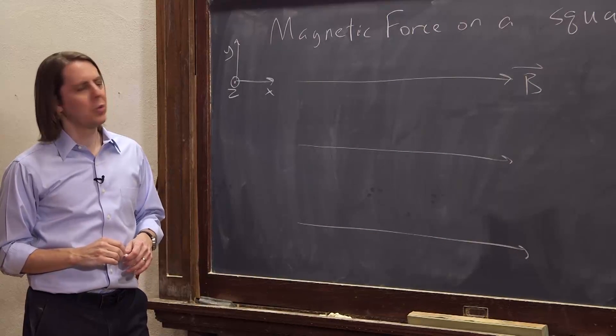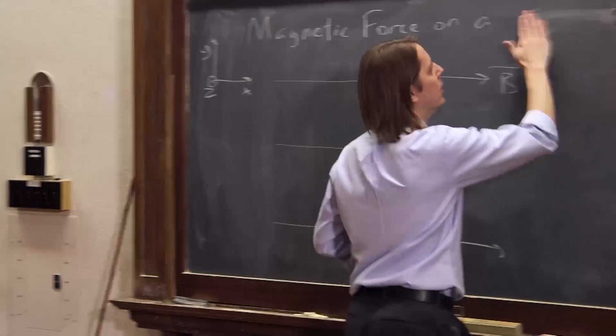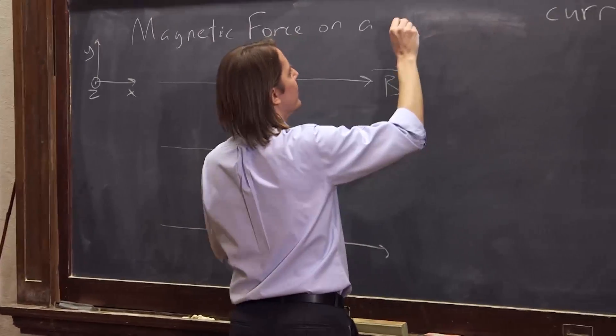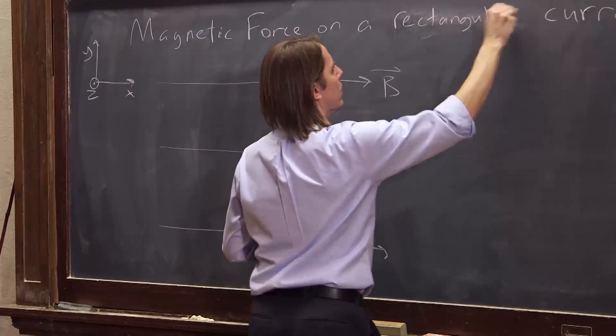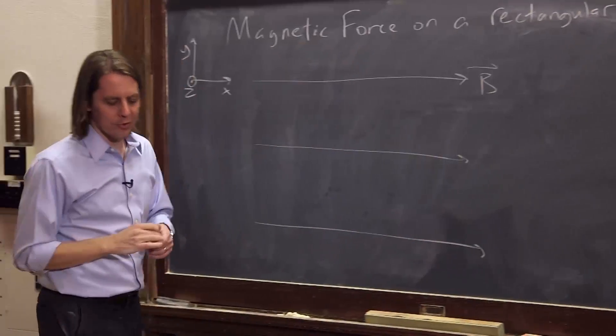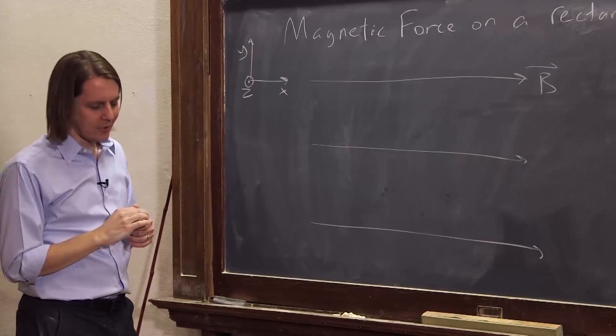And we're actually not going to do a square, let's do a rectangle. Let's let it have different sides, just to prove that our result will not be dependent on it being a square.